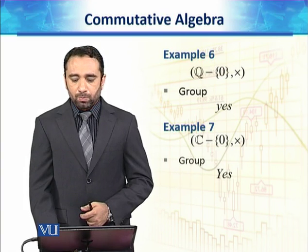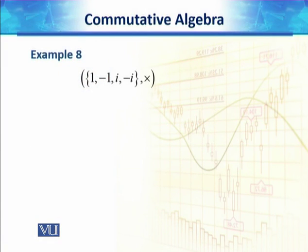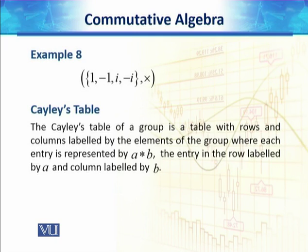Our next example is the finite set {1, -1, i, -i}, and we want to check if it is a group under multiplication. To check this, we use a Cayley table. A Cayley table is a table with rows and columns labeled by the elements of the group, where each entry represents a star b — the element in the row labeled by a and the column labeled by b.